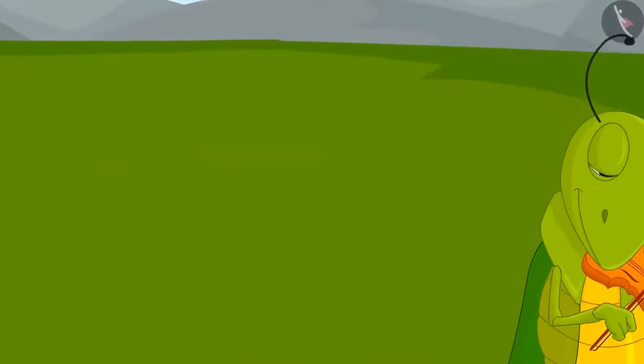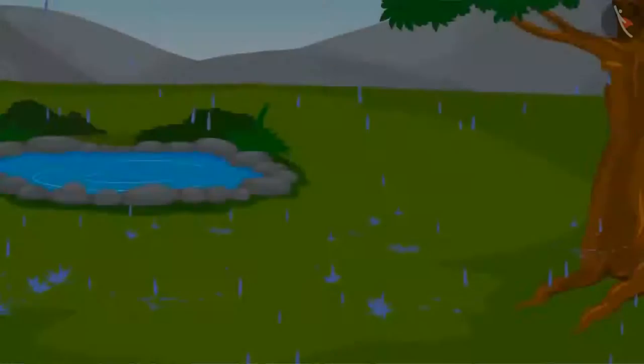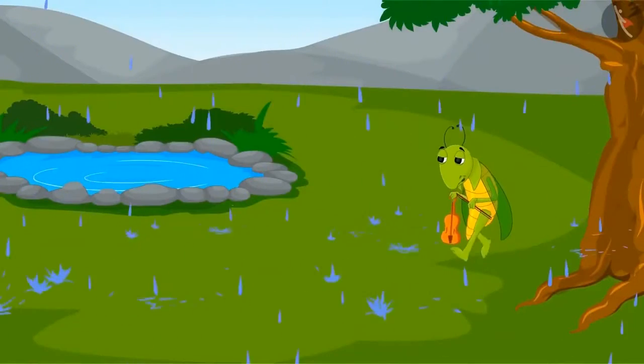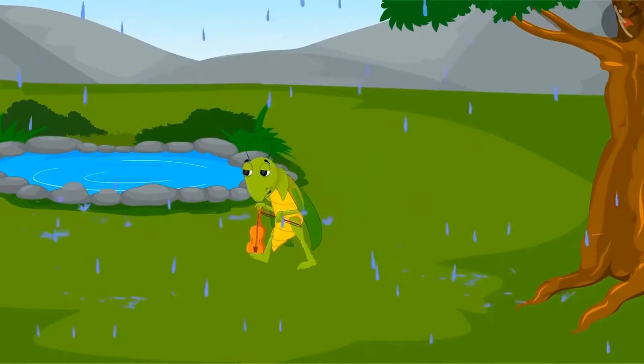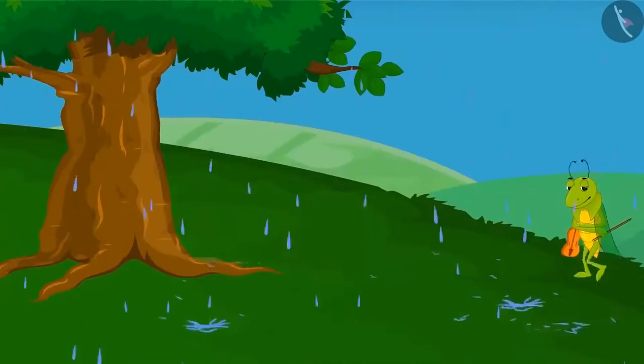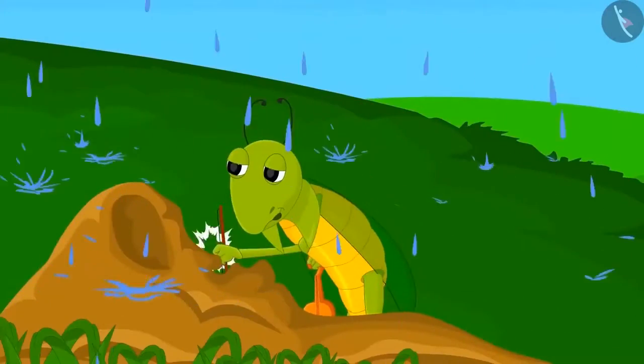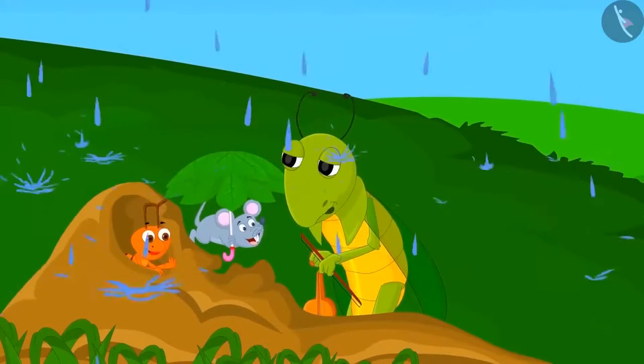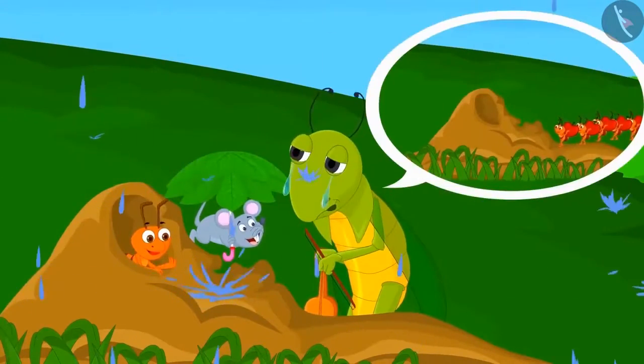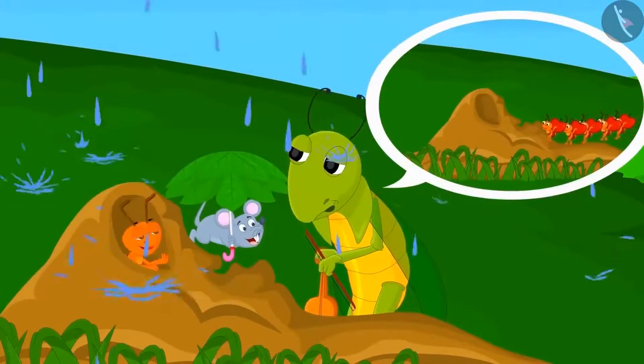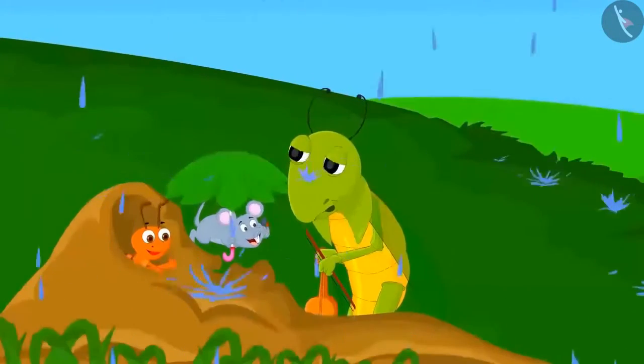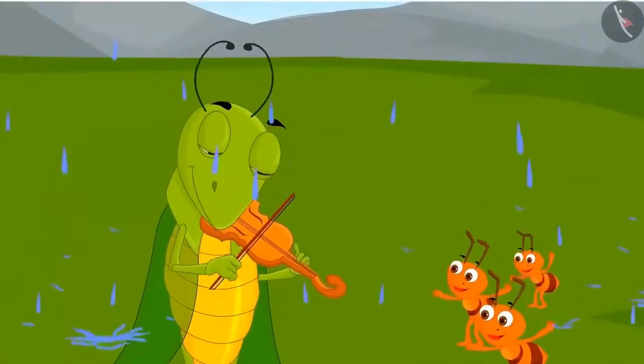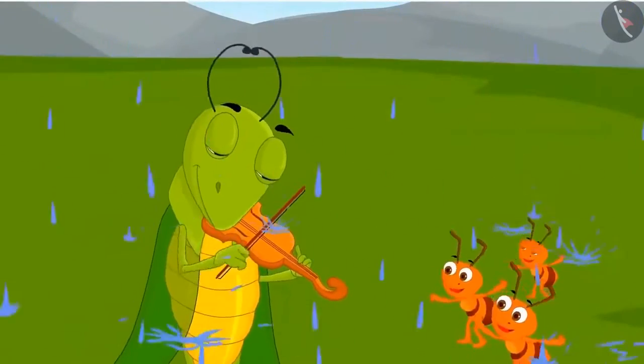Saying this, Tinku went away playing his violin. The next morning, it started raining heavily. Tinku was very hungry and started wandering around in search of food. He then reached the house of the ants and mice. He apologized to the rat that he had learned the lesson of his carelessness and he now knew that it is sensible to work hard. The rats gave him some food and everyone happily started enjoying the rainy season.